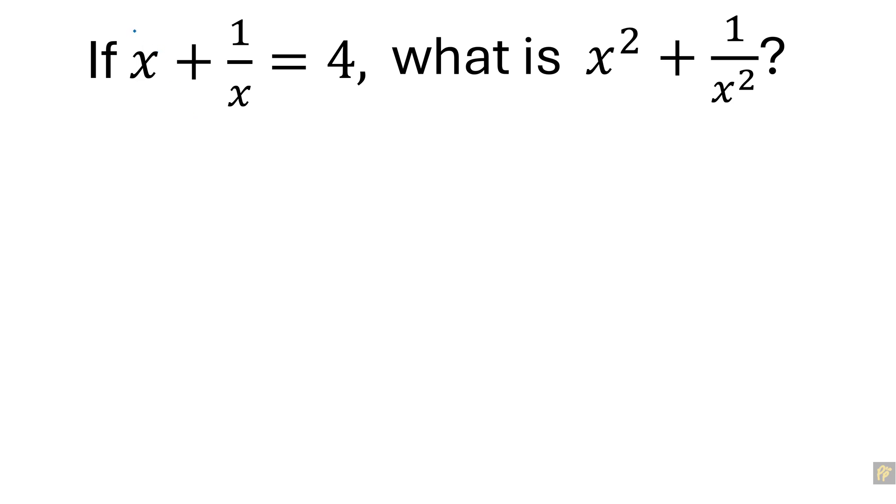The alternative way is to square the left-hand side as well as the right-hand side. The reason we want to square them is the relationship between x and 1 over x is reciprocal.